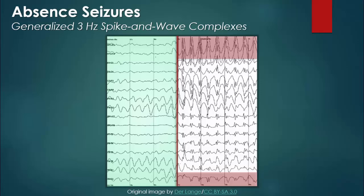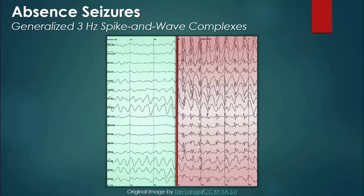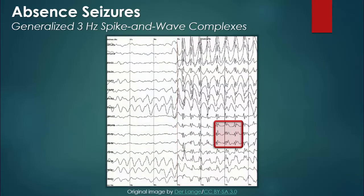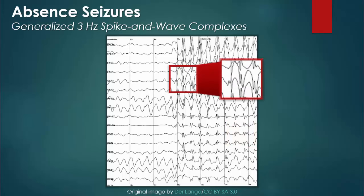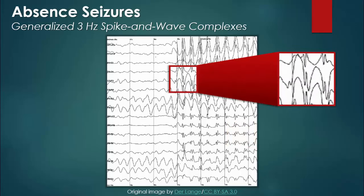After inspecting the EEG from top to bottom, we note that the discharges occur in every lead — in other words, the epileptic activity is generalized. When following a lead from the start of the epileptic discharges to the end of the EEG, a repeating pattern becomes evident. With a closer look, we can see that each of the repeating complexes consists of a spike and a wave.